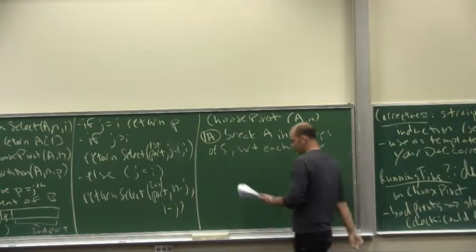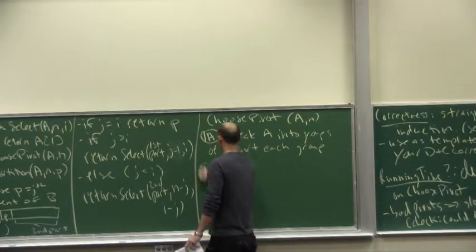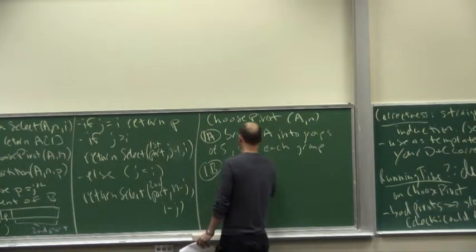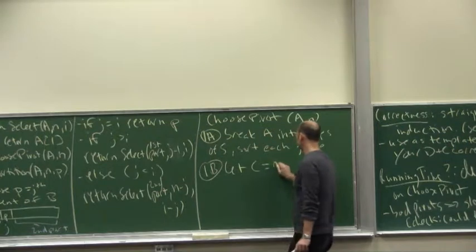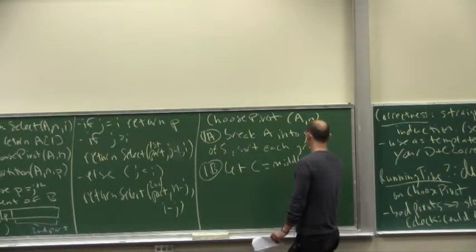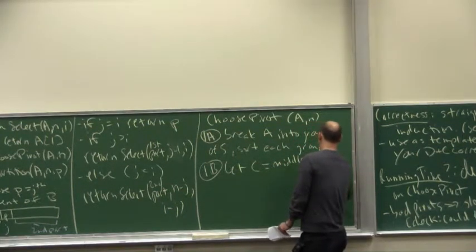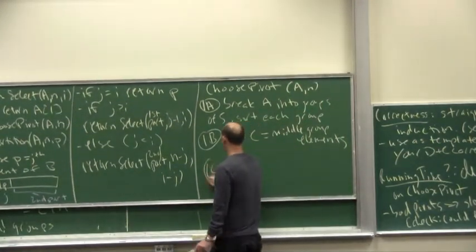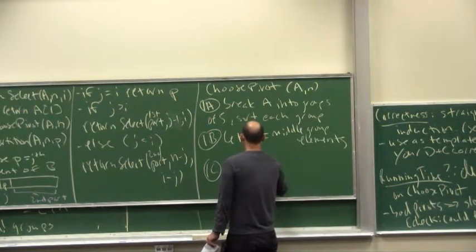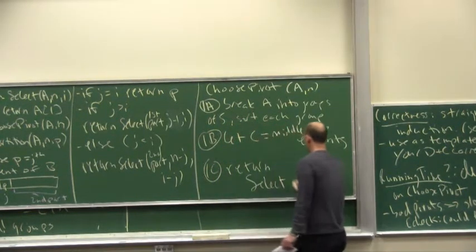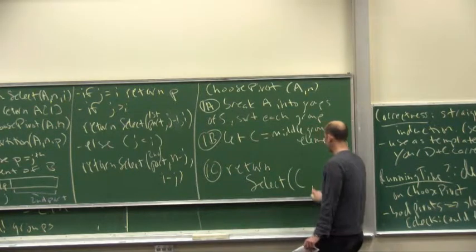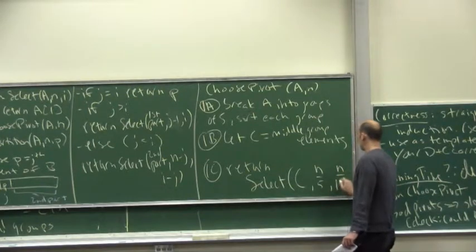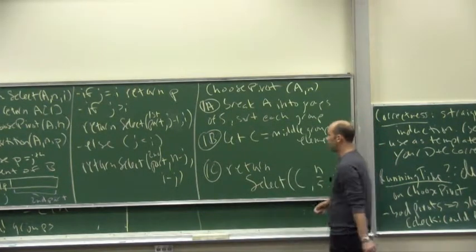We argue that that can be done in linear time. Pull the middle elements into a separate array C. N over five. And now, the median of the array C. Remember, C has length n over five. So the median is going to be the n over tenth statistic of the array C.